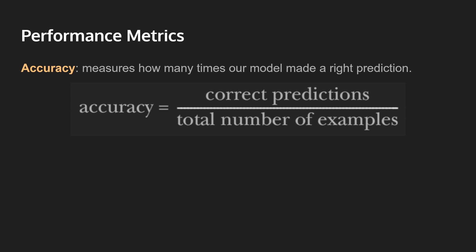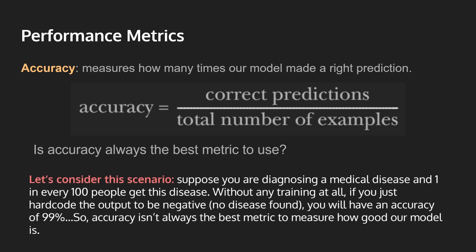So the question becomes: if we have accuracy, then why do we need other metrics? Is accuracy always the best metric to use for classification problems? Well, the short answer is no. Accuracy works for most classification problems, but for others we have to consider some cases. Suppose you're diagnosing a medical disease and one in every 100 people get this disease. Without even training our model at all, we can just hard code the output to be negative — meaning no disease is found — and our model will still have an accuracy of 99%. So accuracy isn't the best metric to use in this case.